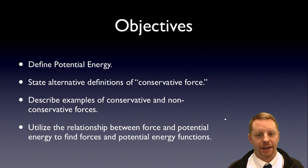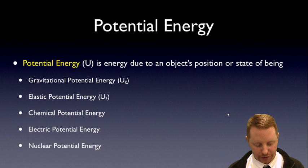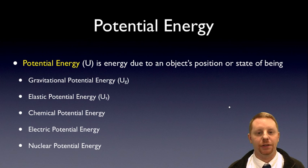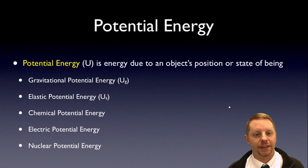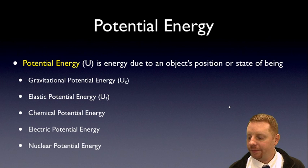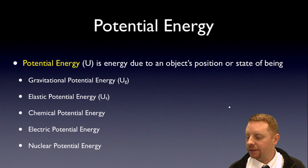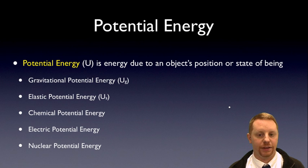Let's start off by defining potential energy. Potential energy, given the symbol U in this course, is energy due to an object's position or state of being. Examples include gravitational potential energy U sub g, elastic potential energy U sub s, chemical potential energy, electric potential energy, and even nuclear potential energy.